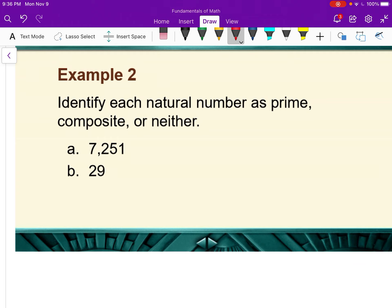Identify each number, natural number, as prime, composite, or neither. Well, the only natural number that's neither is 1. It's the only natural number that's neither. Everything else is either prime or composite.